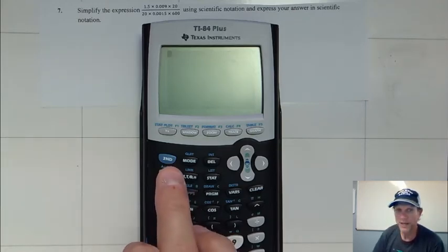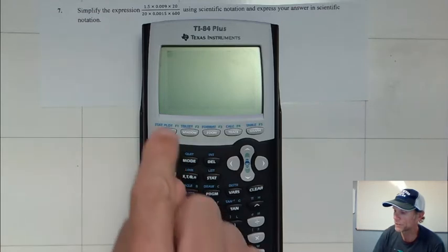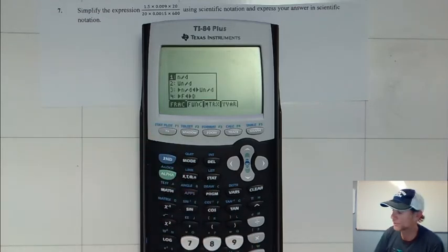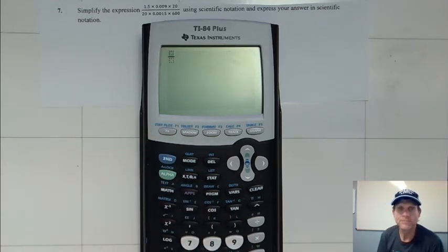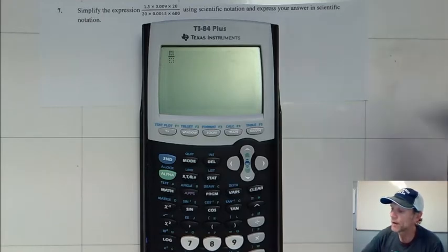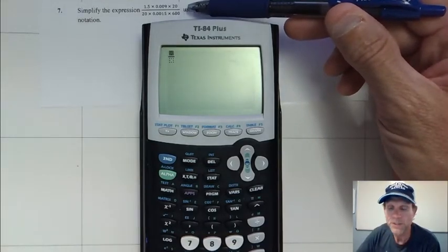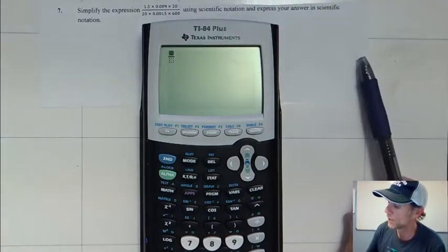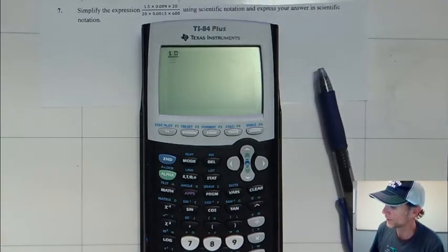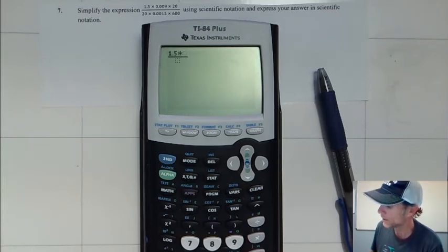If we hit alpha and then y equals key, that gets us our fraction template. What we have here is in the numerator, we have 1.5 times 0.009 times 20.